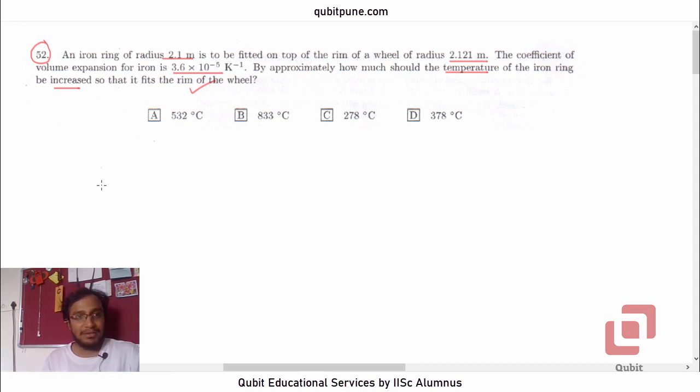So here the original radius, let's call it R1 of the iron ring is 2.1 meter. And we want this iron ring to fit it on a wheel of radius slightly greater than this. So let's call that as R2. That is 2.121.